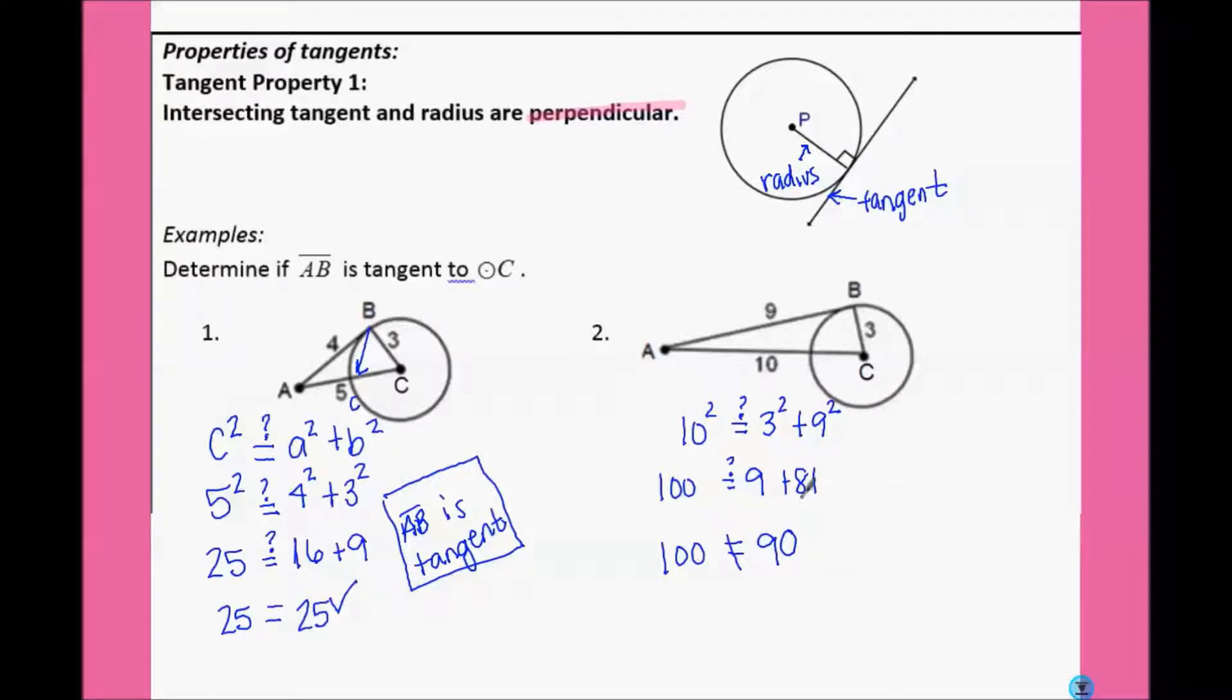So, 100 does not equal 90, therefore AB is not tangent.